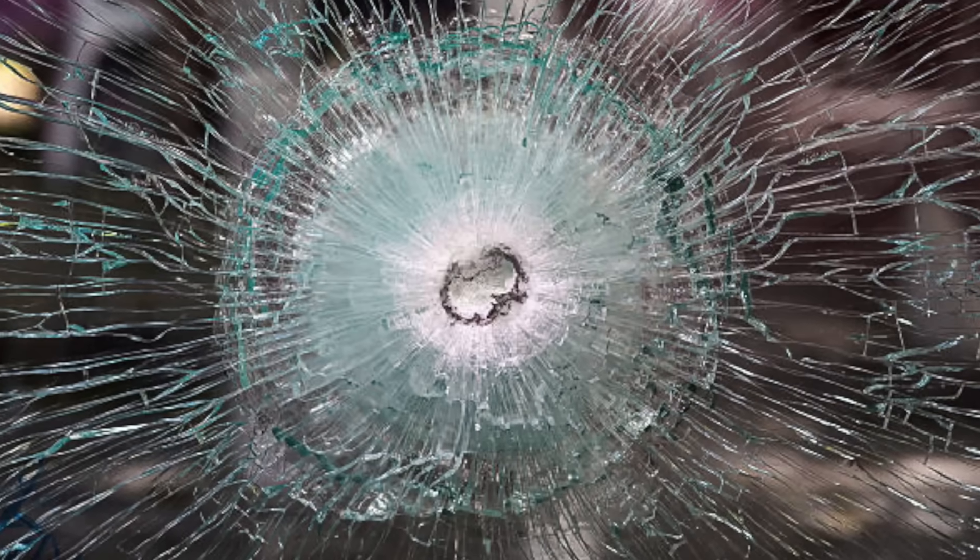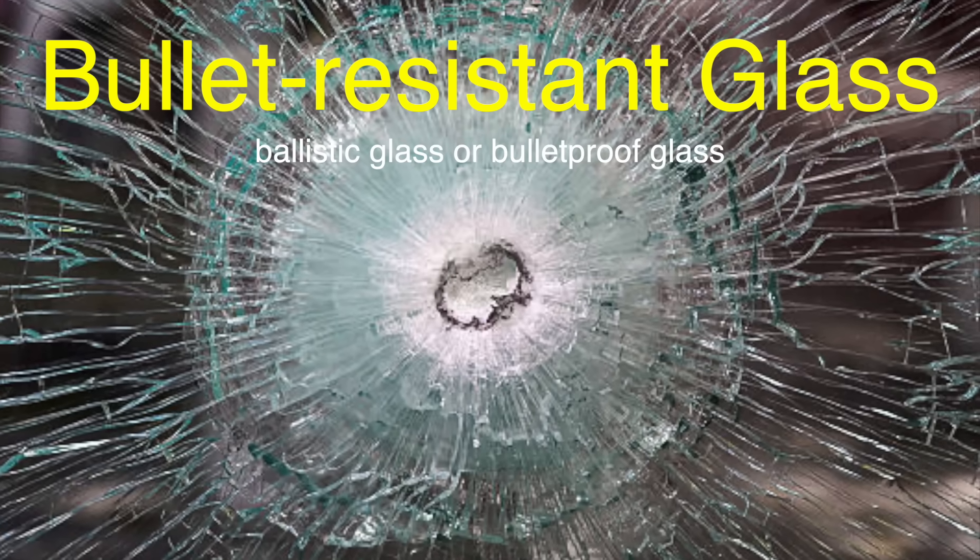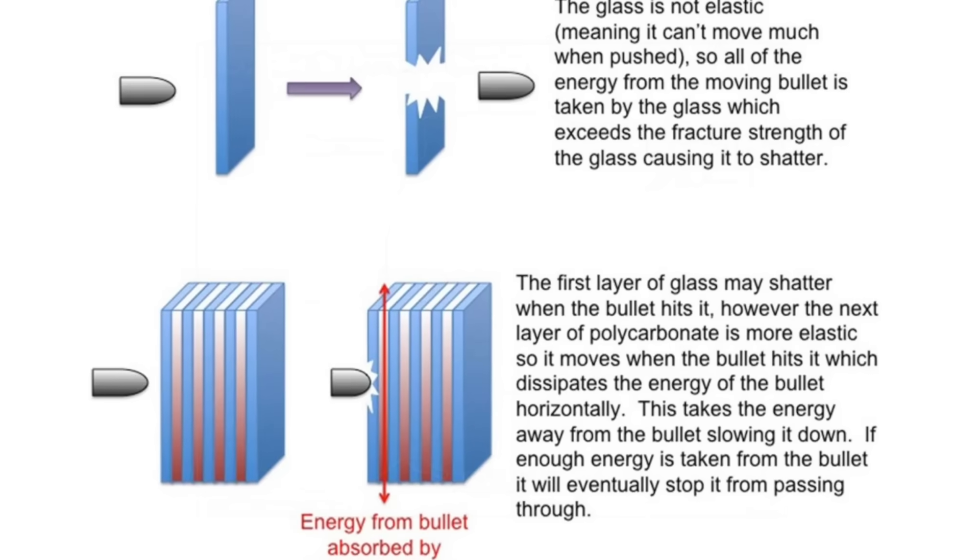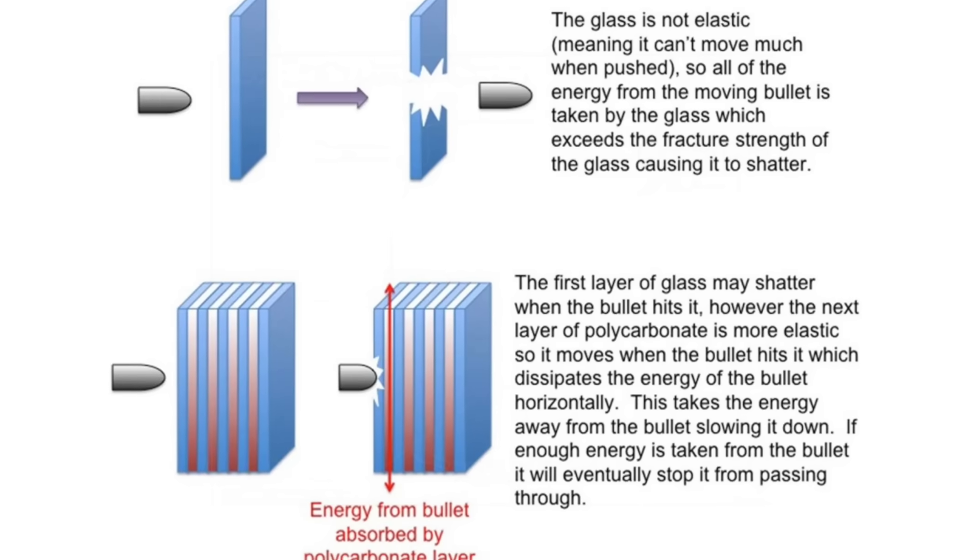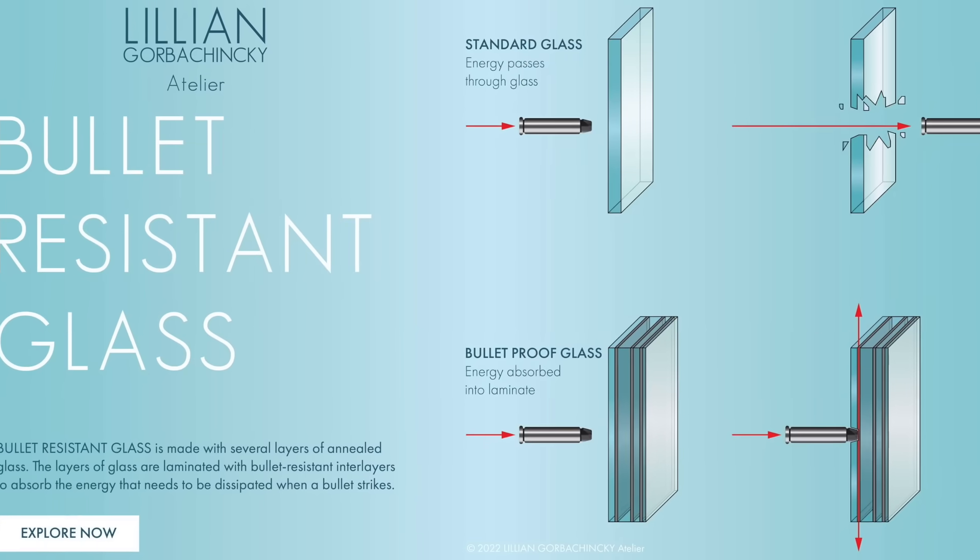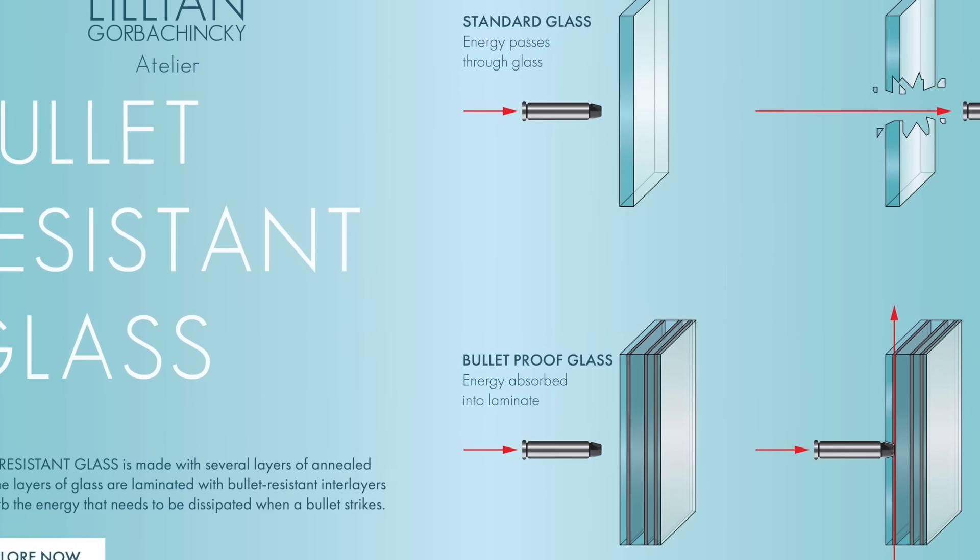Another specialized type is bullet-resistant glass, also known as ballistic or bulletproof glass. It is typically made by layering multiple sheets of laminated glass with layers of polycarbonate or other plastic materials. The multiple layers of glass and plastic work together to absorb the energy of a bullet and prevent it from penetrating the glass.